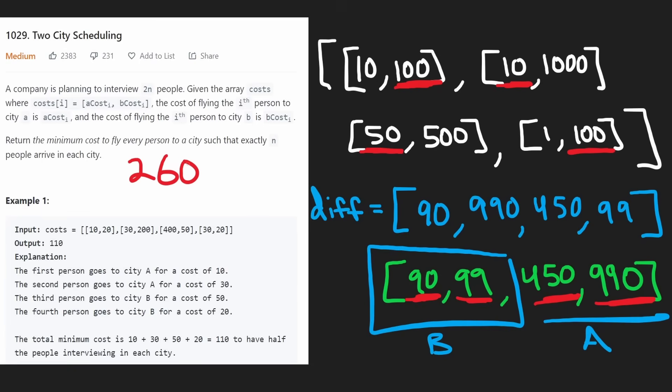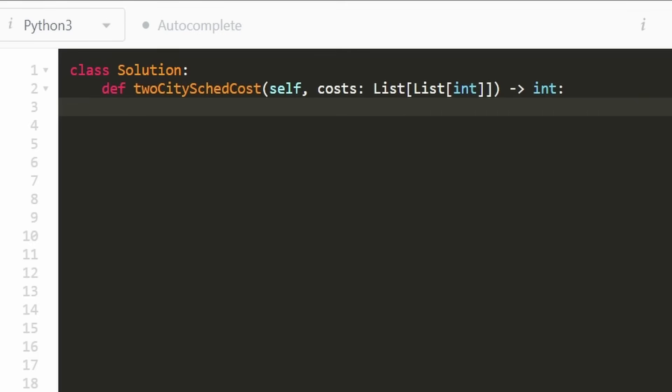By the way, what was the time complexity of that? Most of it was big O of n, but if you notice, we did have to sort this diff array. So technically, the time complexity became n log n because of the sorting. But that's definitely better than the previous DP solution we had that was n squared. Okay, now let's code it up.